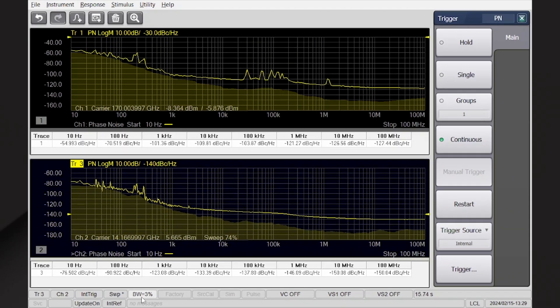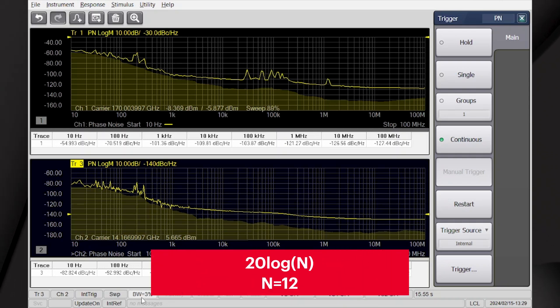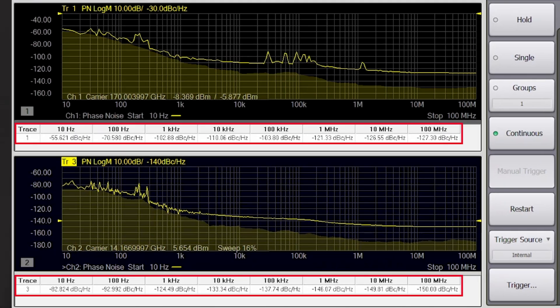In a multiplier, the phase noise scales by 20 log n where n is the factor from one center frequency to another. Since we use the multiplier factor of n equals 12 here, in theory the phase noise should increase by 21.5 dB with the 20 log n rule. As you can see, the phase noise data in the table shows about a 21.5 dB difference at all offsets.